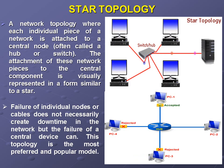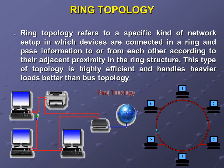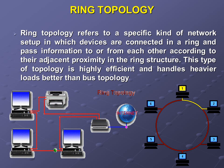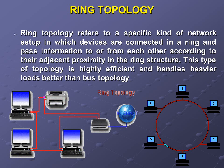Ring topology, as shown in the diagram, refers to a specific kind of network setup in which devices are connected in a ring and pass information to each other according to their adjacent proximity in the ring structure. This type of topology is highly efficient and handles heavier loads better than bus topology. In this diagram, you can see data moving from one computer to the next.